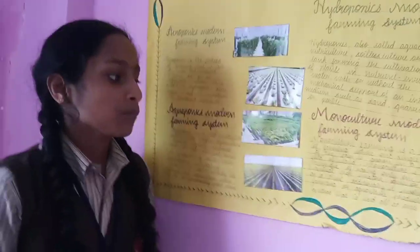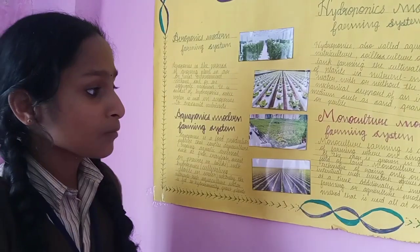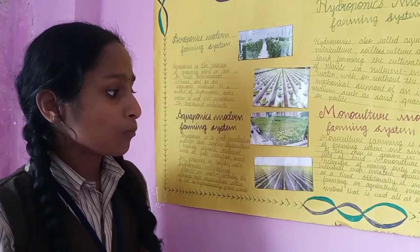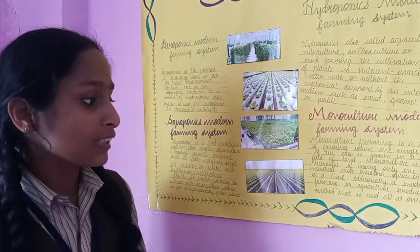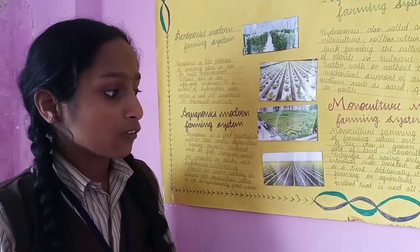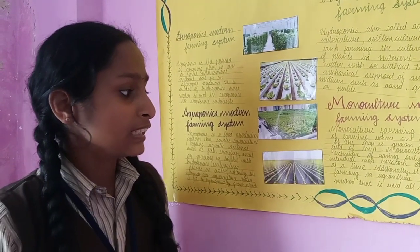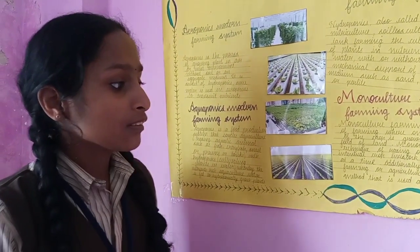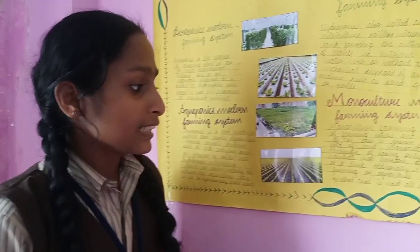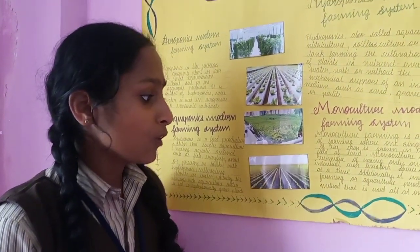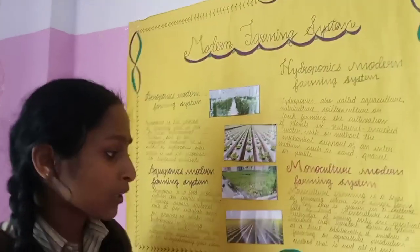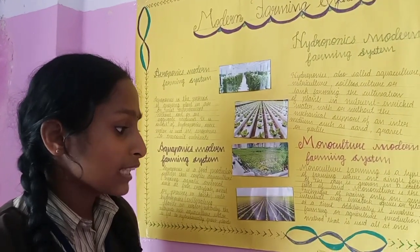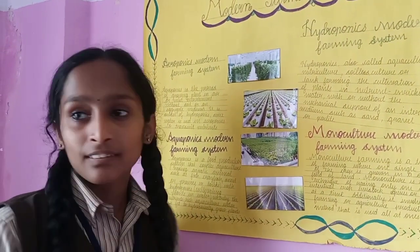Monoculture farming is a type of farming where one single form of crop is grown in a field of land. Monoculture is a technique of raising only one genetically uniform crop or species at a time, used widely in farming and aquaculture production.